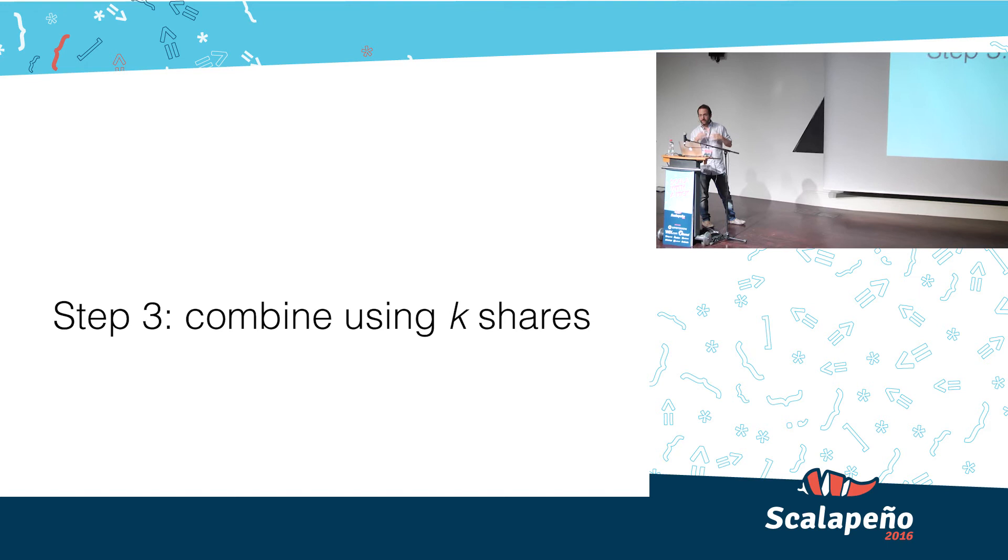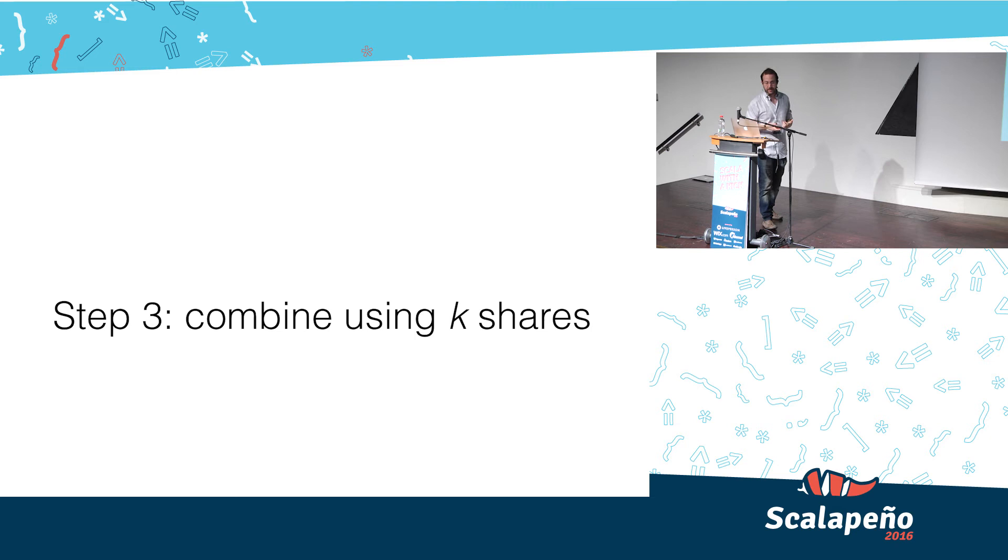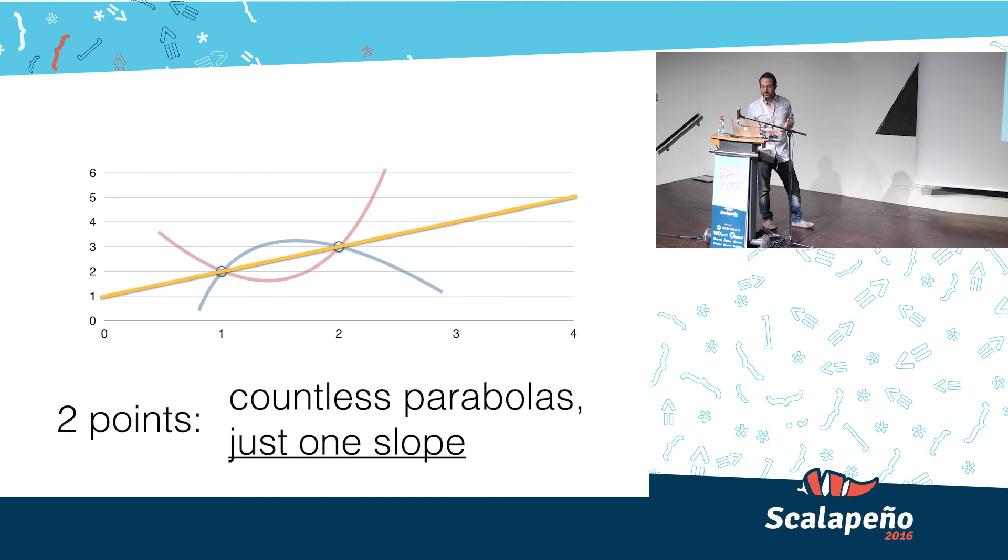the code is here for the next step of combining our K shares. Now that we have our K shares that we calculated beforehand, we want to combine them. In order to do that, we have to reassemble the polynomial that we disposed of earlier, when we calculated the shares.